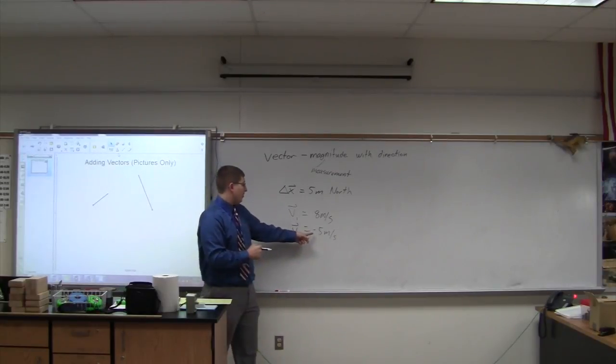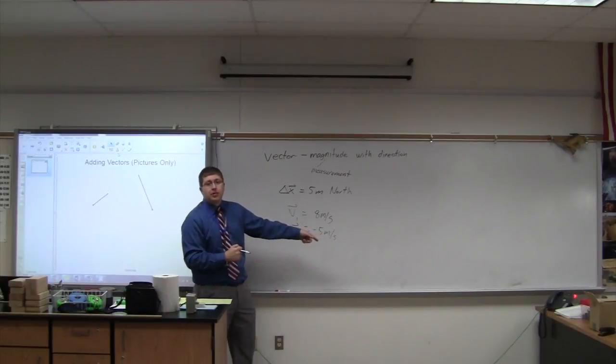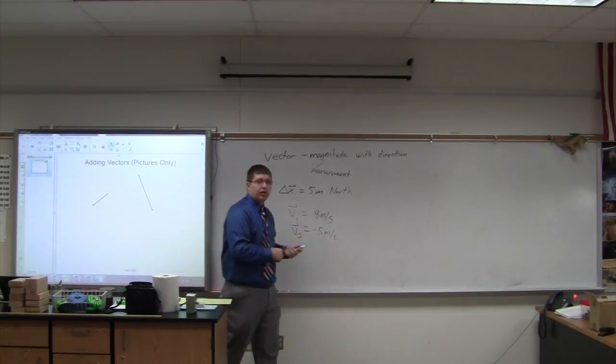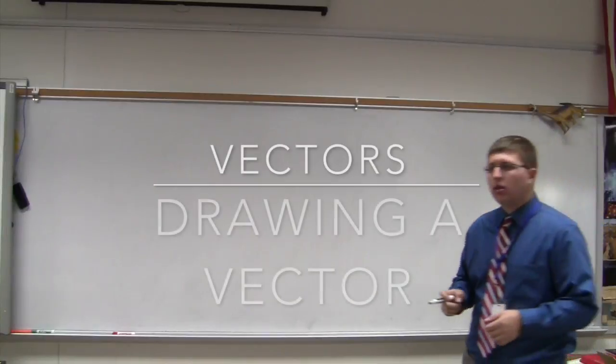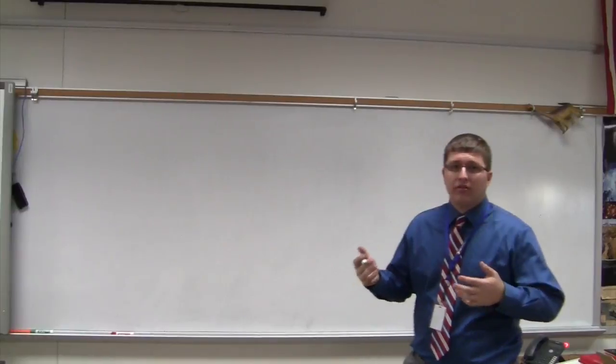Down here, it's a little bit easier to see. We have a negative 5 meters per second. 5 meters per second being the magnitude. Negative being the direction. All right, now that we know what a vector is, we're going to learn how to add some vectors together.